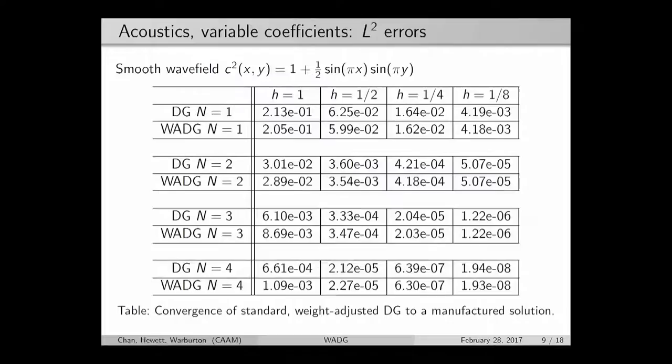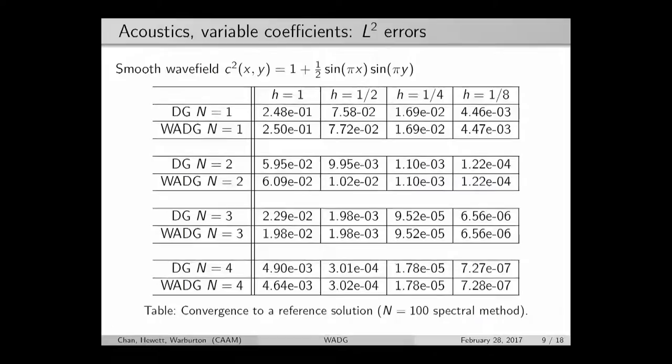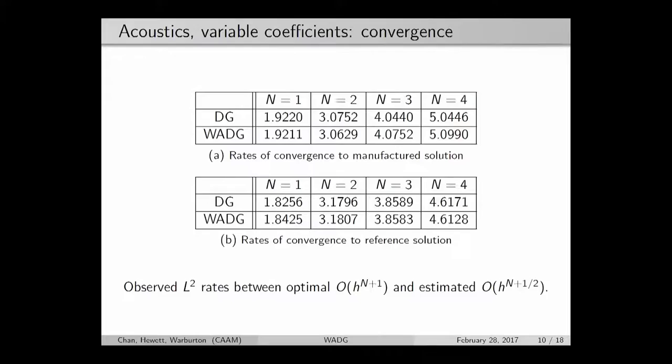This works for both a manufactured solution and a reference solution where I've used a very highly accurate method to compare. If I look at the rates of convergence for this weight-adjusted DG method and compare them to DG, we basically get order two for degree one polynomials, order three for degree two, order four for degree three, and so on.